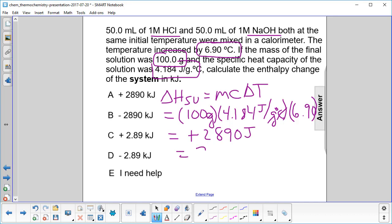So this is really 2.89 kilojoules. You move the decimal over 3 to make it kilo. Now that's the surroundings. We want the system. Take the negative of that and you get negative 2.89 kilojoules.